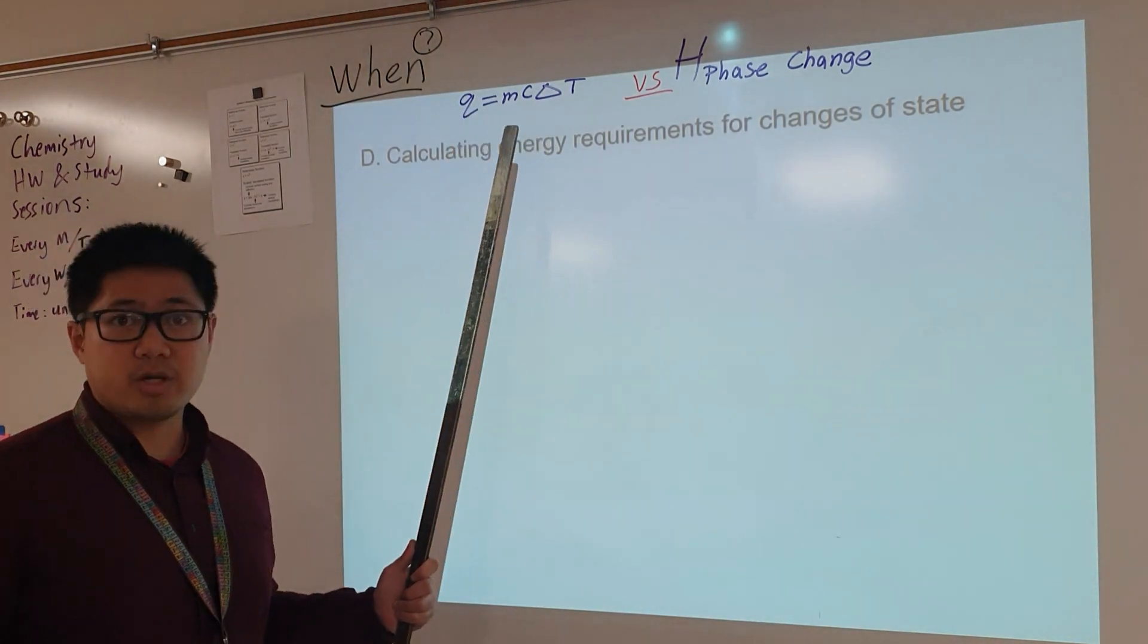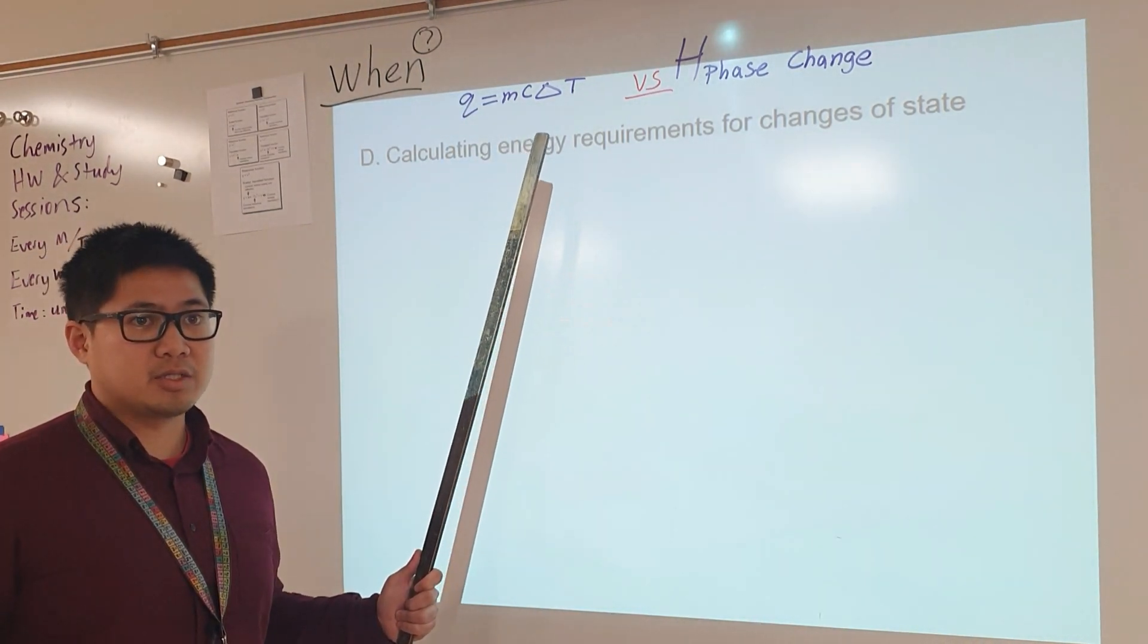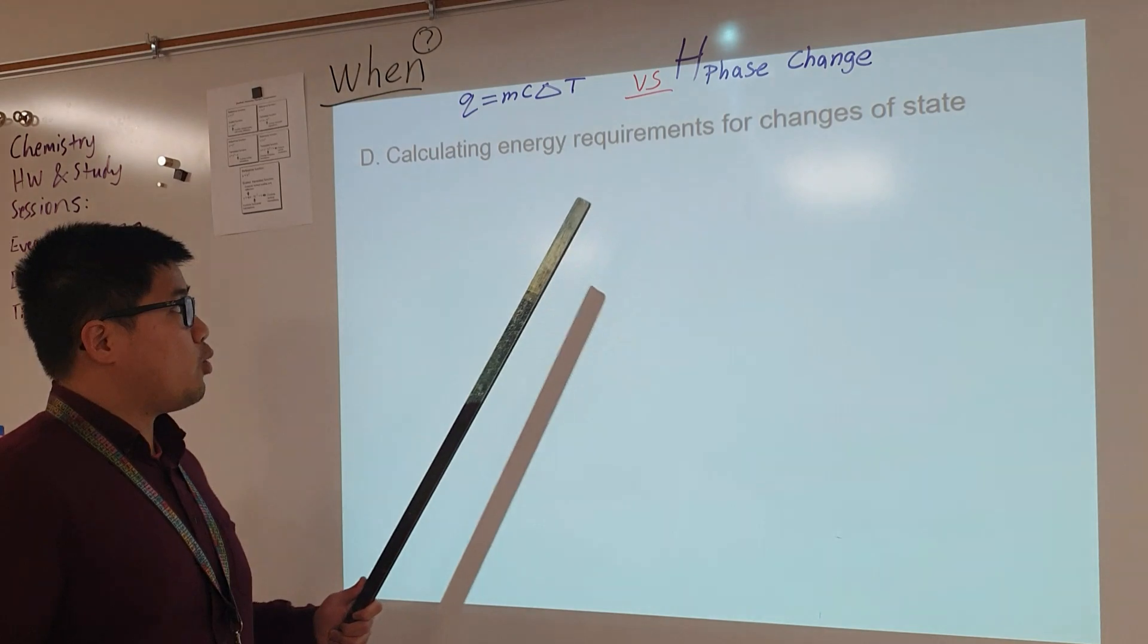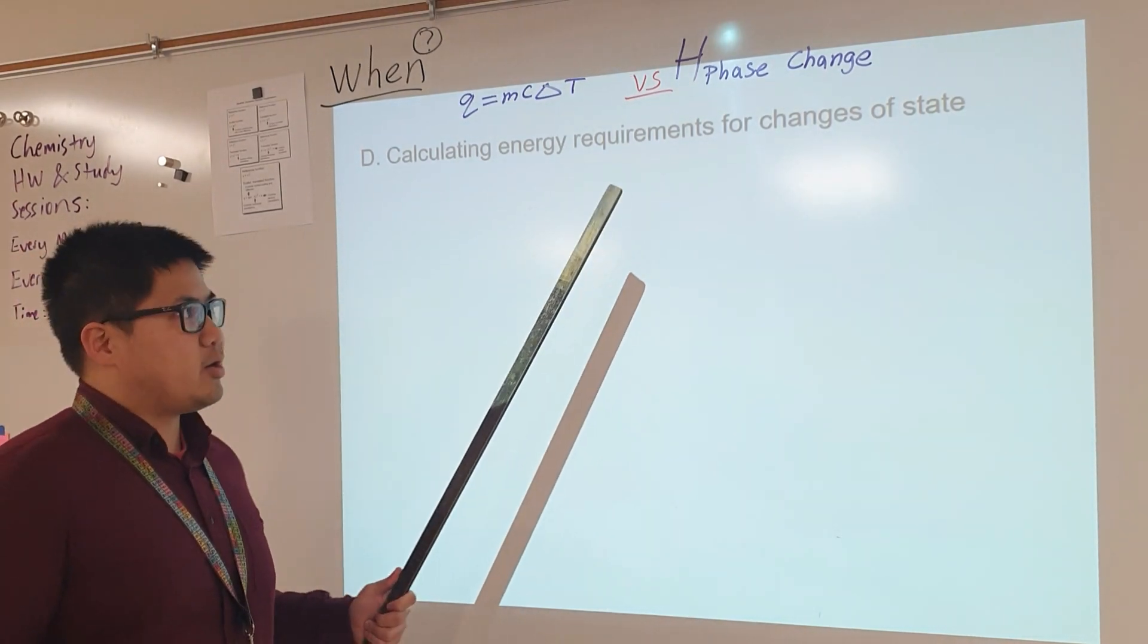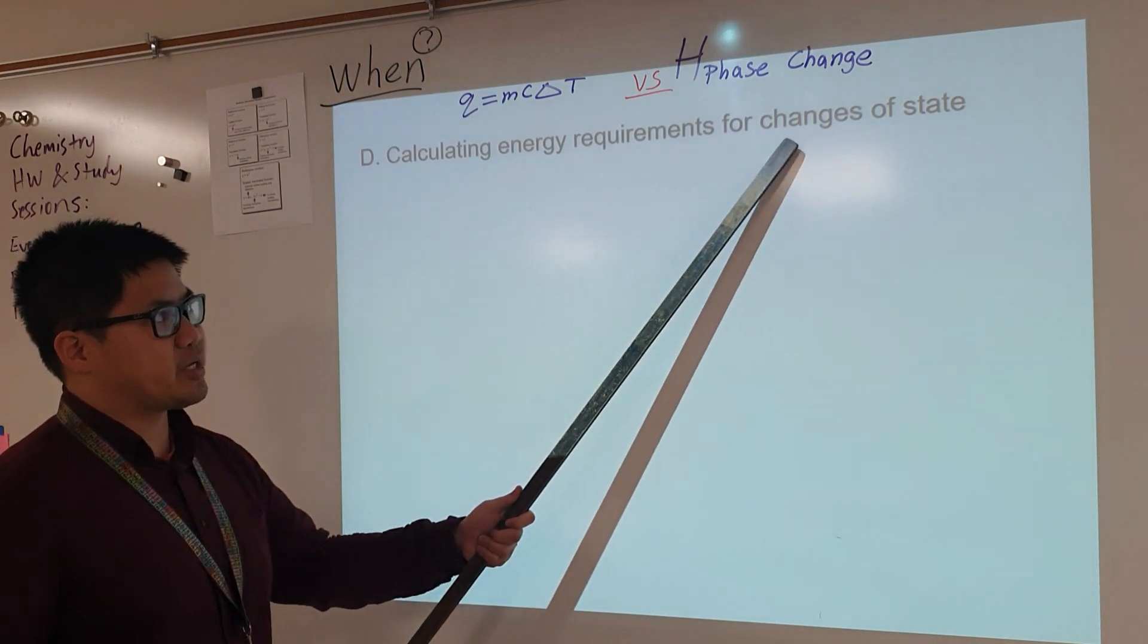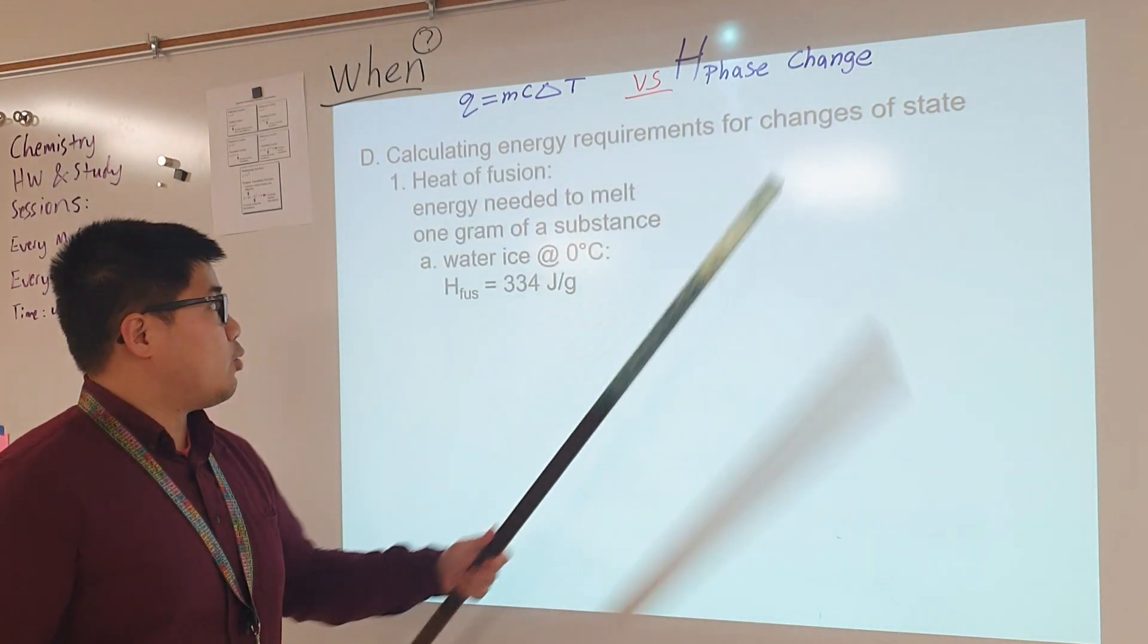Plug in zero to this formula, you wouldn't really get anything. The question now is, we know energy is put in, you've seen a blowtorch melt ice. How do we take into account the changes of state?